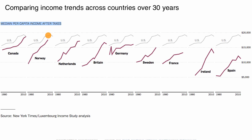On another level, even at the endpoint in 2010, someone earning that median per capita income after taxes in the United States will still be better off. We see that generally true for all of these countries — they all have steeper curves, so a higher rate of change. But the United States, on an absolute level, has stayed higher, although the gap has gotten smaller for most of these.